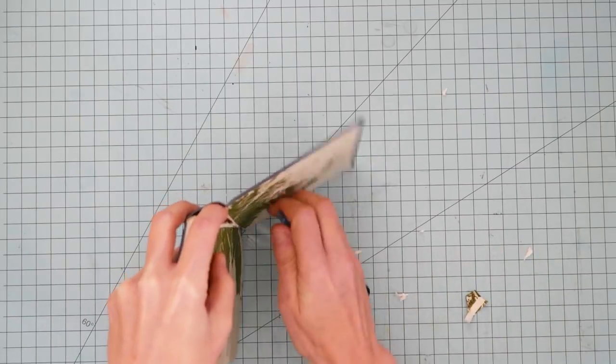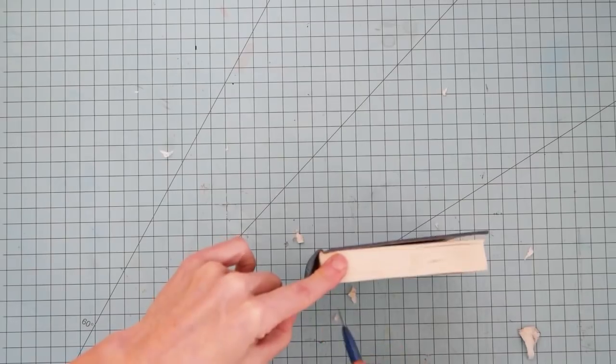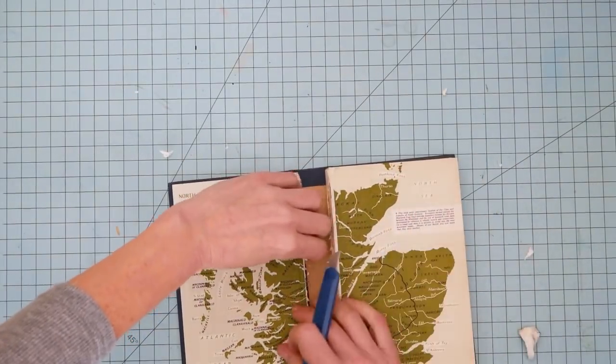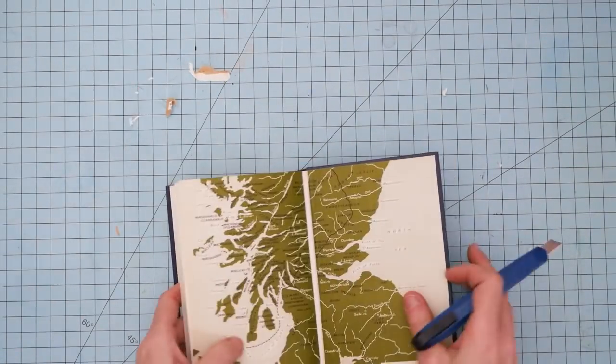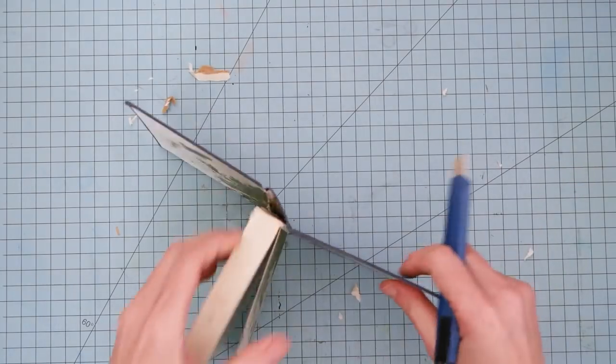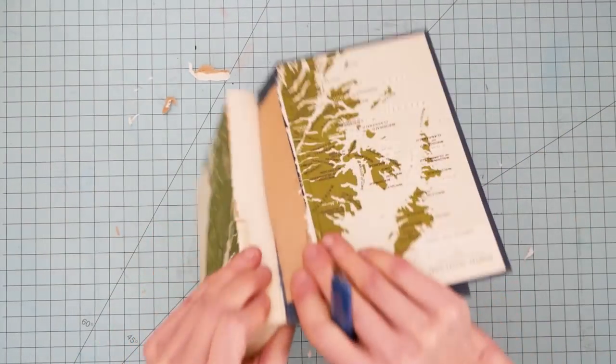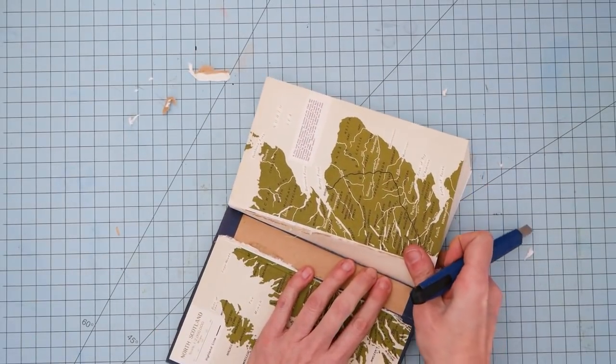So just carefully make shallow cuts along this crease. Alright, so there is our first cut just like that and then we do the same thing back here. It's a little bit easier because we can fold this back like this and then you can cut through it fairly easily.